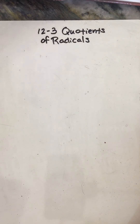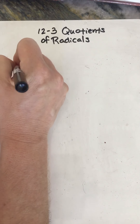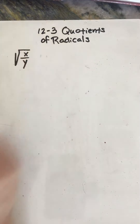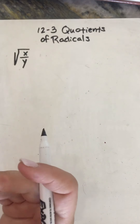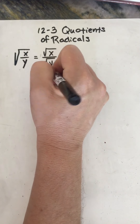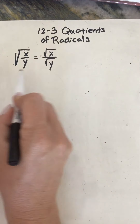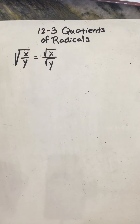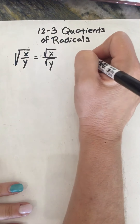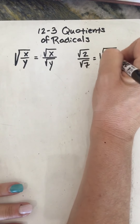We are going to talk about a property. When you have the square root of x over y — so it's the square root of a fraction — it is the same thing as the square root of the numerator divided by the square root of the denominator. You can think of it as it's distributed over division. So you could write the square root of 2 over the square root of 7 is equal to the square root of 2/7.